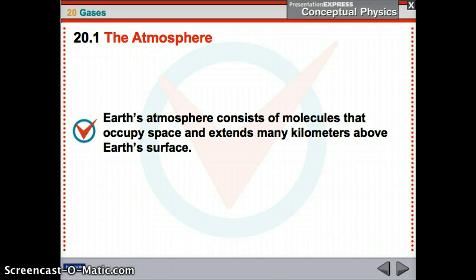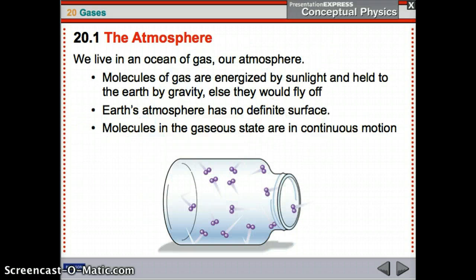First, the atmosphere. The atmosphere is full of gases. It consists of molecules that occupy space and extend many kilometers above Earth's surface. We live in an ocean of gas — that's our atmosphere. Those molecules of gas get energy from the sunlight and they're held to Earth by gravity. Even though it seems like they don't weigh anything, they're actually pulled in by gravity. Otherwise, we wouldn't have an atmosphere.